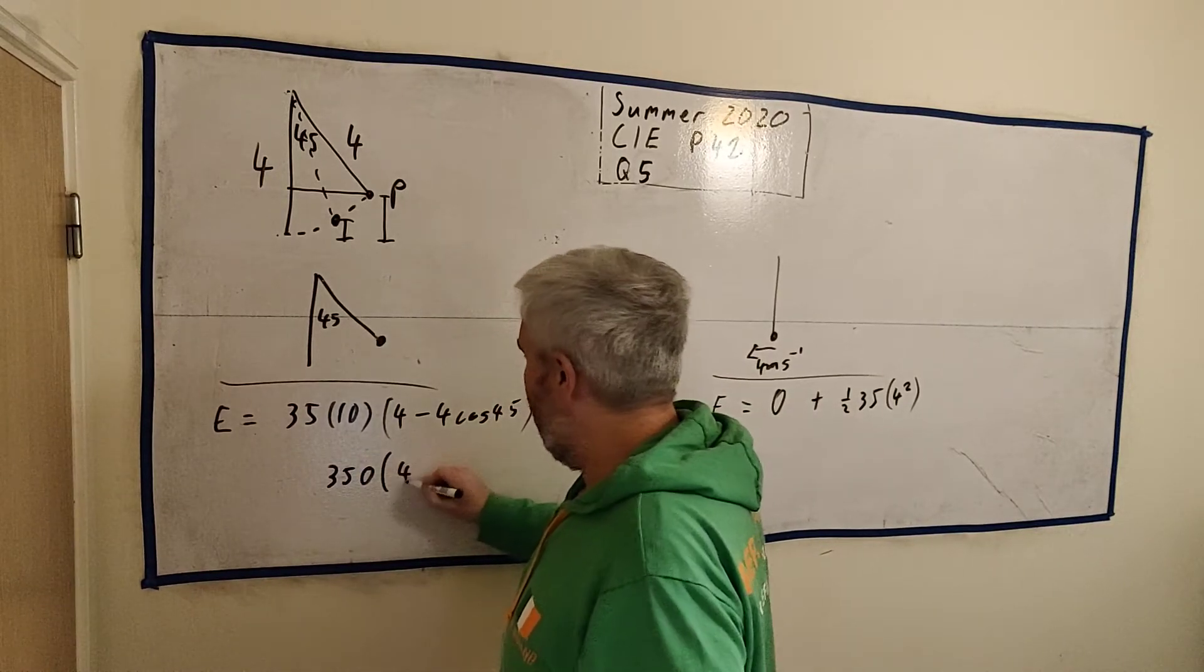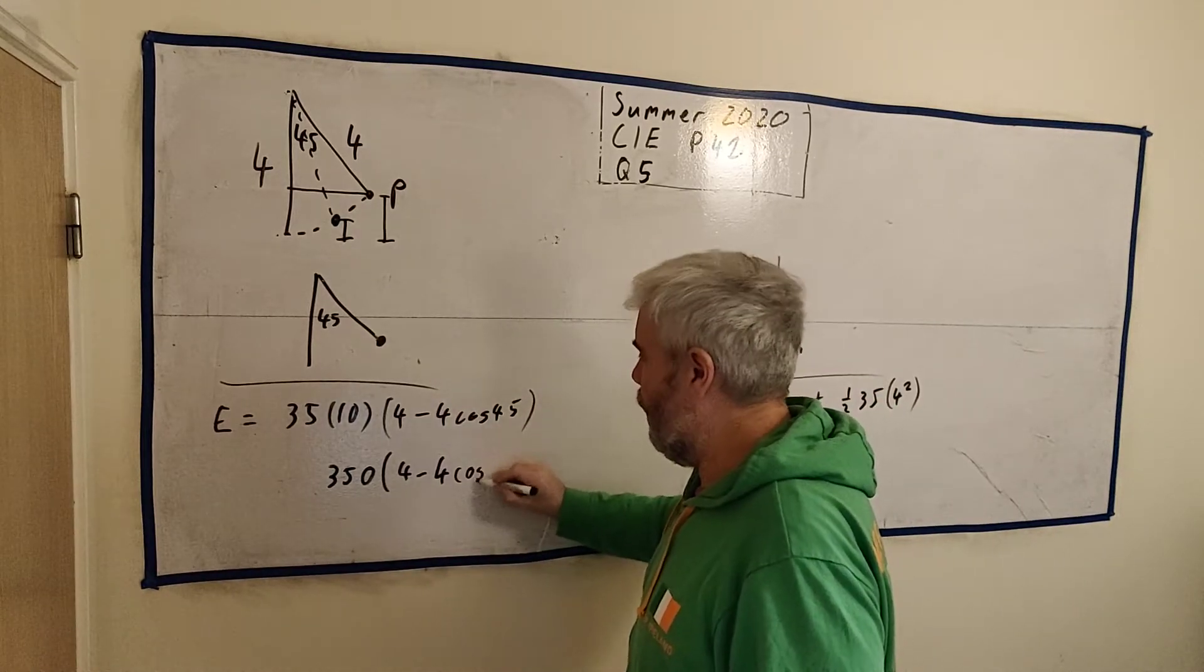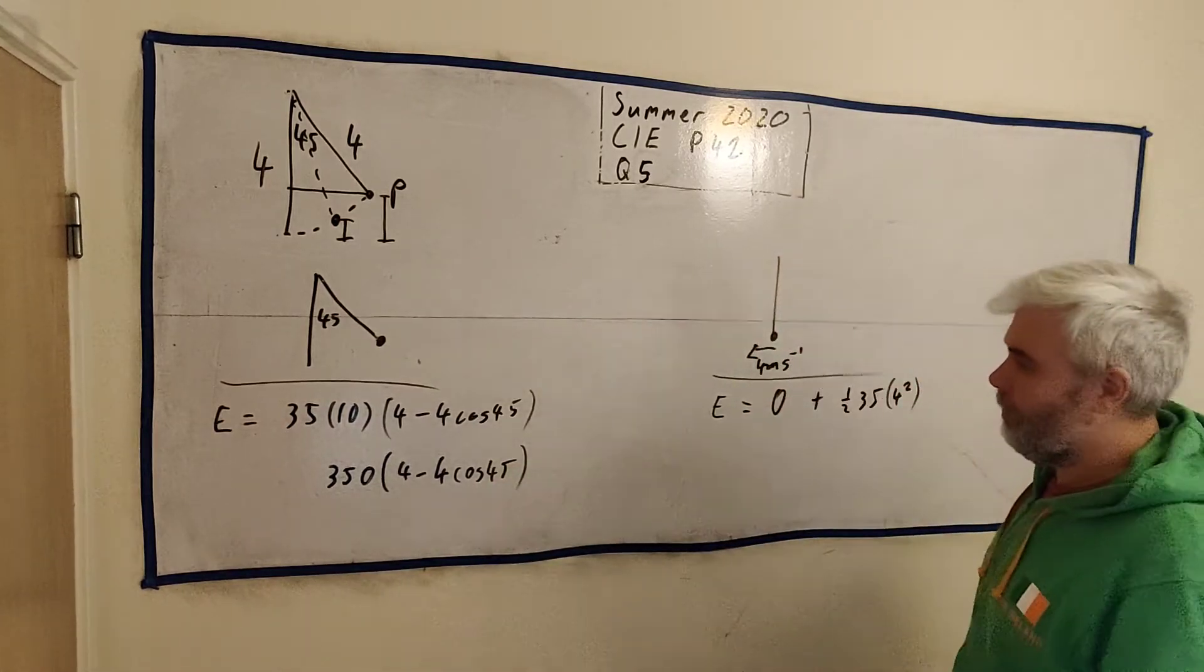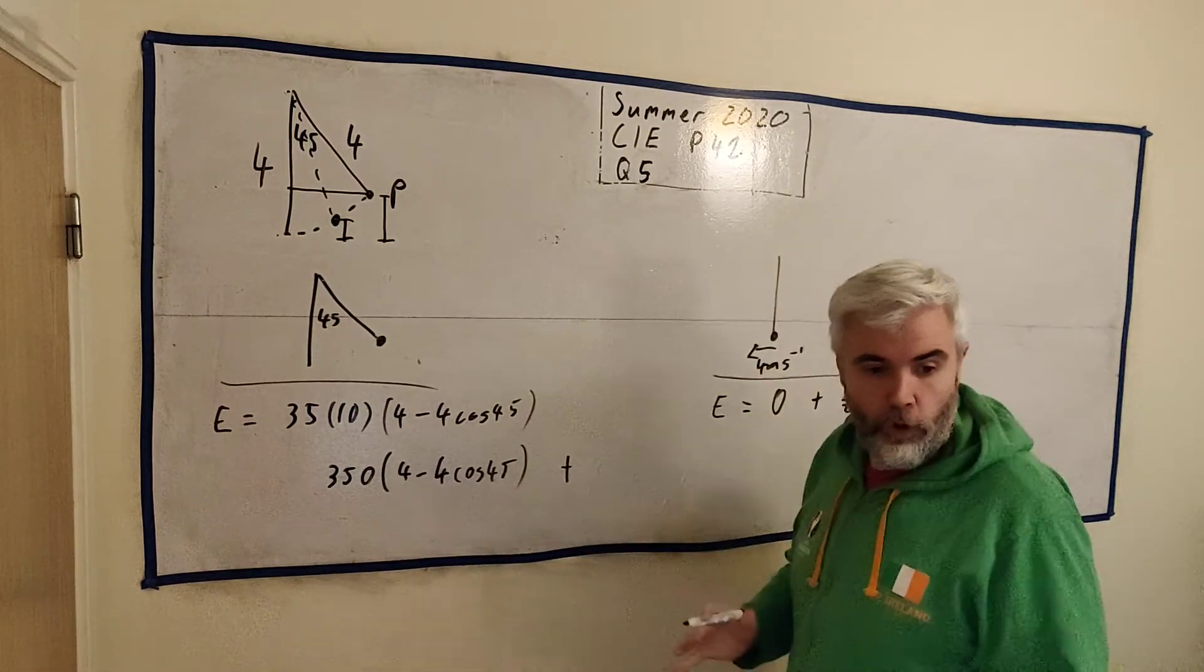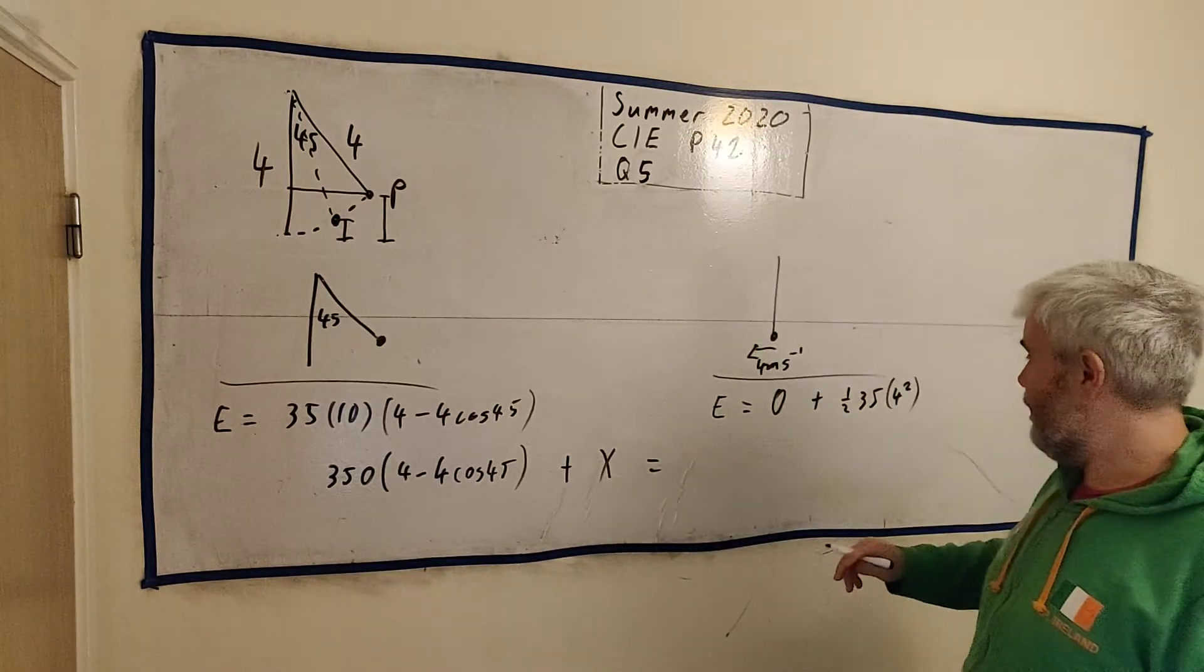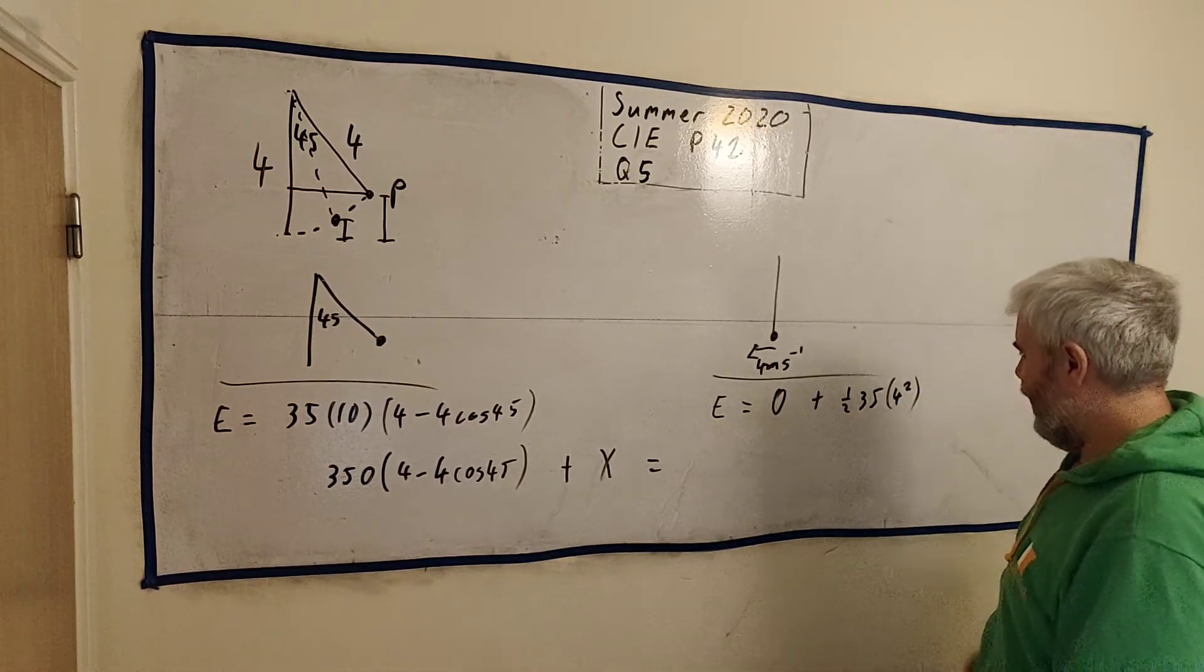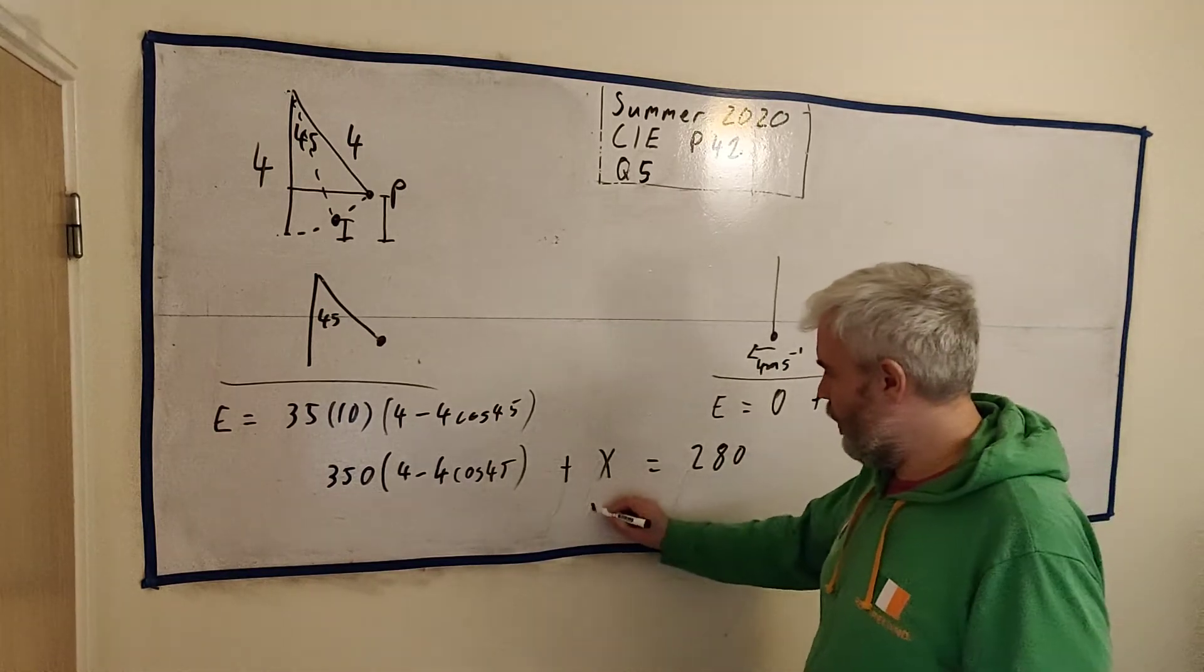So this one, we have 354 minus. This is a number. You could put it in and just leave the decimal places if you want. I like to leave the exact numbers until the end. Cosine 45 is an exact number. I don't know what it is off the top of my head, so I won't. So we have the energy in the first state plus the work done, which is X, must equal the energy in the last state. This is 16 times a half is 8. 8 times 35. Can I do that in my head? I have 280, I believe.